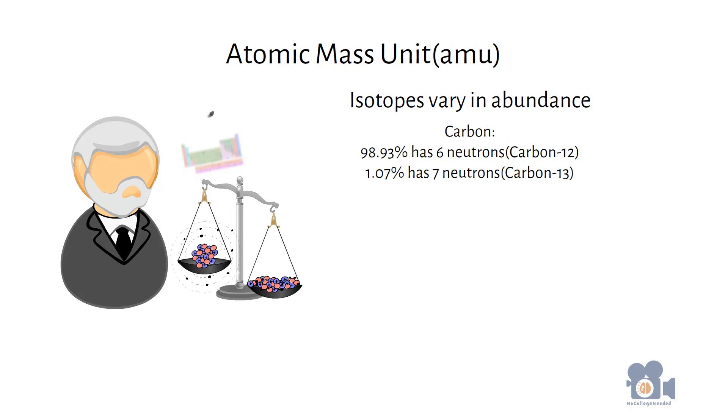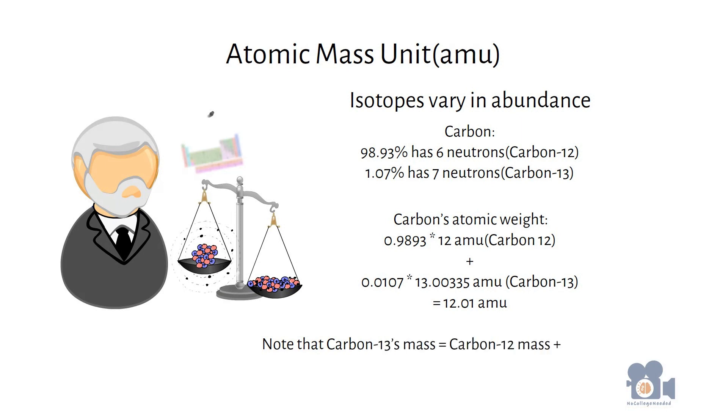To determine carbon's atomic weight, we just multiply the masses by the percentages to get the average mass. This looks like 0.9893 times 12 AMUs plus 0.0107 times 13.00335 AMUs to equal 12.01 AMUs. Note that carbon-13's mass equals carbon-12's mass plus the mass of a neutron.